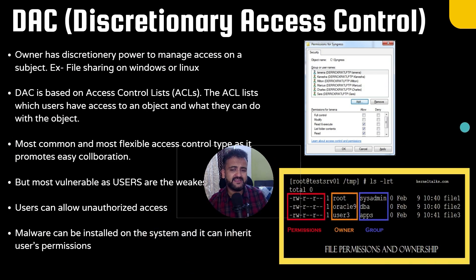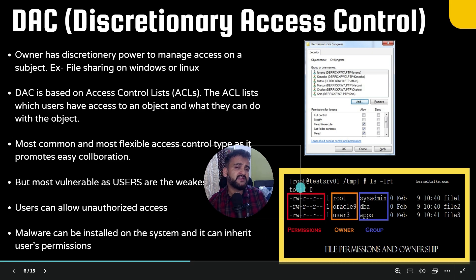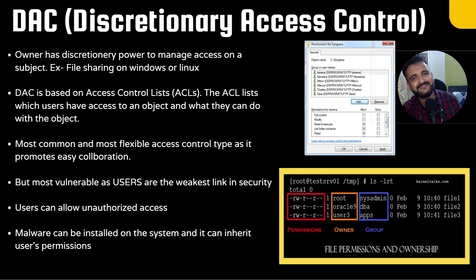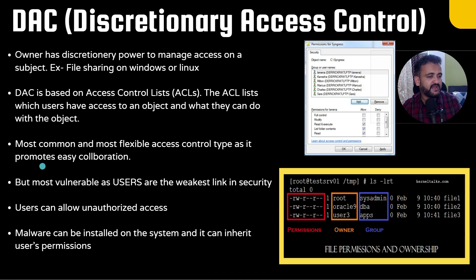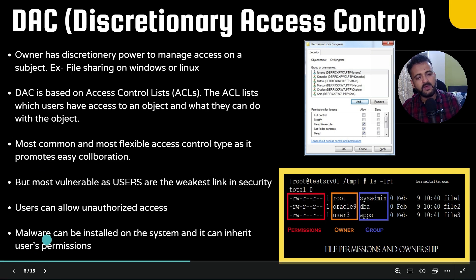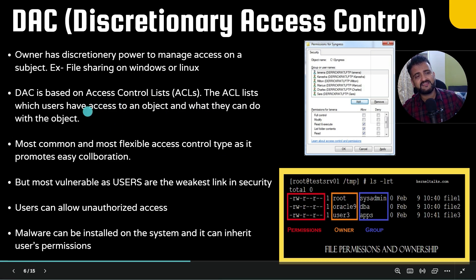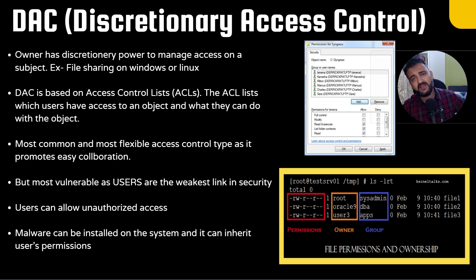File sharing in Windows or Linux is similar — you decide who will have read, write, or execute permissions. DAC is the most common and very flexible because the owner has all the rights, but it is very vulnerable. In security there's a common saying that the user is the weakest link in the chain. If the user gets compromised, everything is compromised — that is the downside of DAC. Malware can be installed on the system and inherit user permissions, making it a big risk in secure environments. Access control lists (ACLs) are a part of discretionary access control, holding details of which user has what level of access.